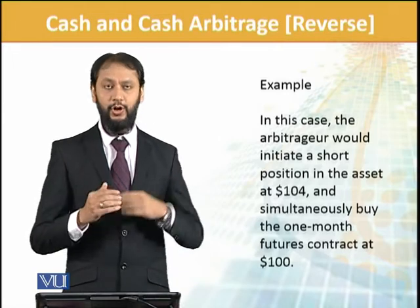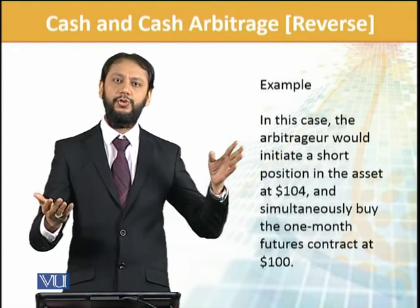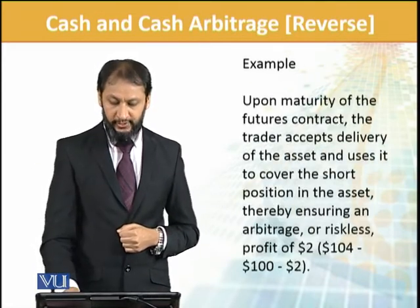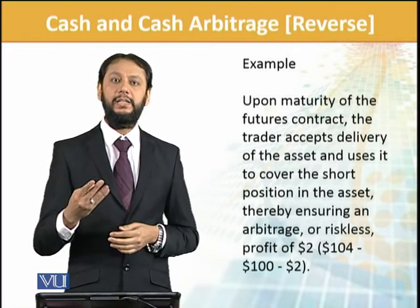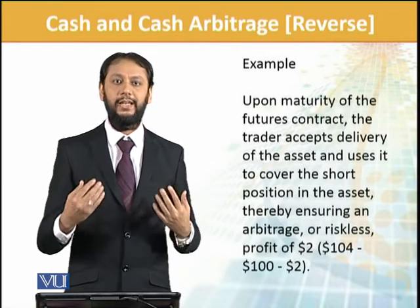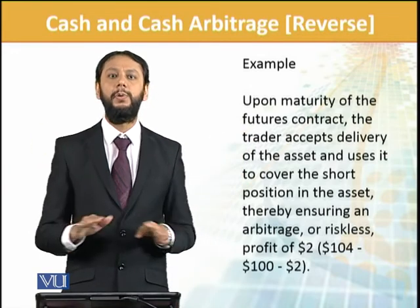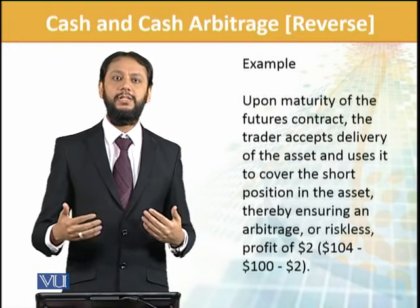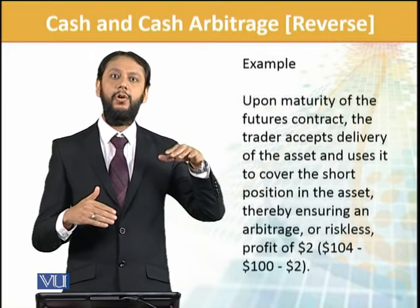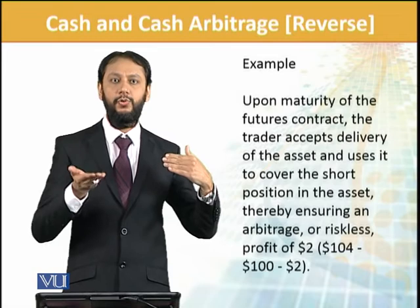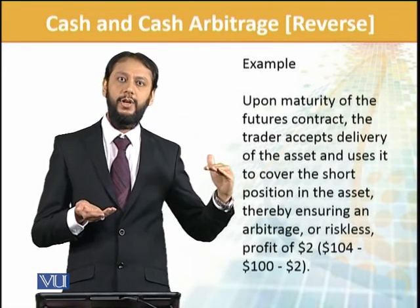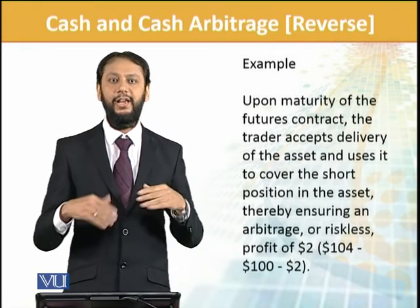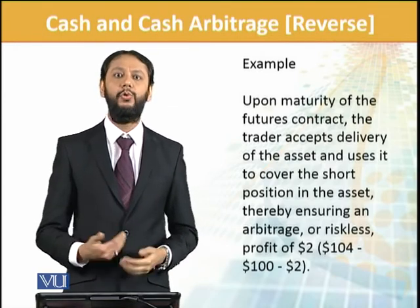In this case, the arbitrageur would initiate a short. I sell at 104 and simultaneously buy in the future at 100. The difference is 4 rupees; I incur a cost of 2 dollars and 2 dollars go into my pocket — that is the gain. Selling is done, buying is done, so we are locked in, and the profit is risk-free. We have exploited the arbitrage opportunity. As arbitrageurs do this, the future price at 100 will start rising as people buy it, and the spot rate selling at 104 will start falling. Eventually both will come to a level where the difference is approximately 2 — which is the carrying cost. This is also why arbitrageurs bring efficiency to the market. Thank you.